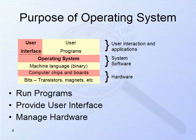Let's take a closer look at the purposes of the operating system: running programs, providing a user interface, and managing the hardware. When you double-click a program like Microsoft Word, the computer takes a few seconds before it runs. During this time, the operating system finds Microsoft Word on the hard drive, brings it into RAM, and starts its execution. The operating system is what actually finds and runs a program when you request it.